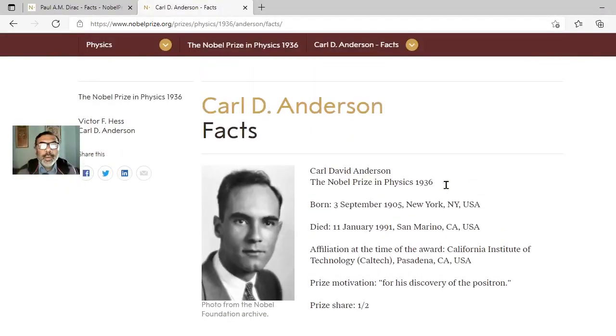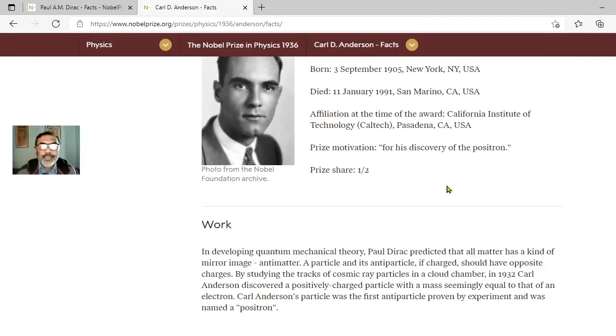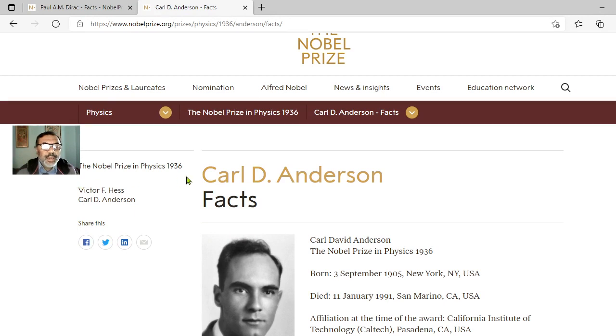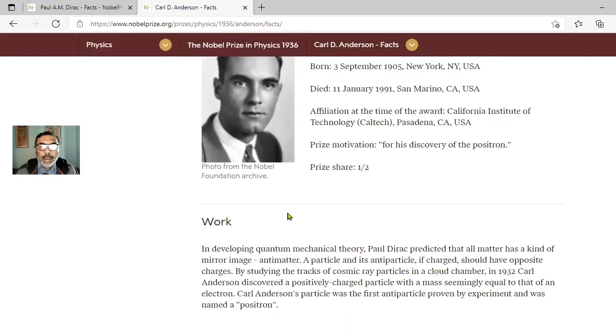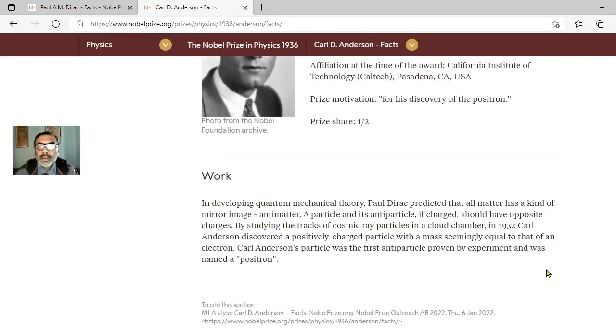In our video today we will talk about positron. The Nobel Prize in Physics in 1936 was awarded to Karl David Anderson for the discovery of positron. Let us read the citation.